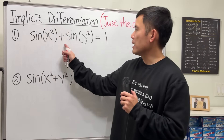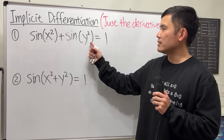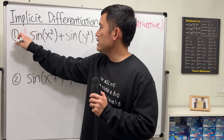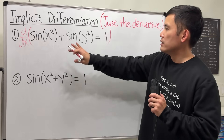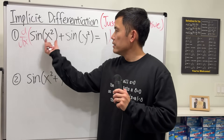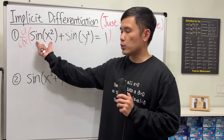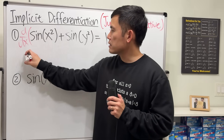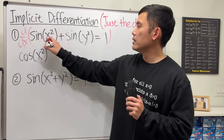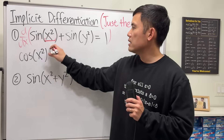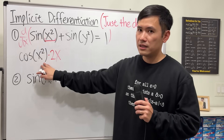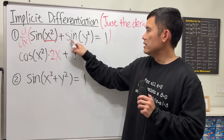First one: we have sin of x squared plus sin of y squared is equal to 1. Notice the y is not isolated, so implicit differentiation is what we need. I'm going to put down d/dx in the front to show that we are taking the derivative with respect to x. This is just a sum, so we focus on the derivative of the first term. The derivative of sin is cosine, the input stays the same, and then we have to use the chain rule.